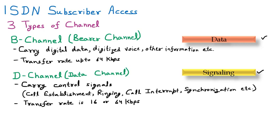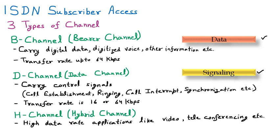The third type is the H channel, or hybrid channel. As the name suggests, it is a mixture of multiple things, making it suitable for high data rate applications like video or teleconferencing. If you want to communicate on a real-time basis, you need the H channel. There are several sub-types: H0 at 384 kbps, H11 at 1536 kbps, and H12 at 1920 kbps.